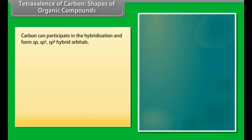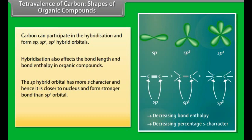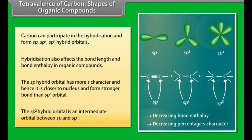Carbon can participate in hybridization and form sp, sp2, and sp3 hybrid orbitals. Hybridization also affects the bond length and bond enthalpy in organic compounds. The sp hybrid orbital has more s character and hence it is closer to the nucleus and forms a stronger bond than sp3 orbital. The sp2 hybrid orbital is an intermediate orbital between sp and sp3.